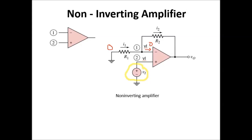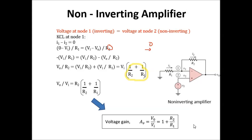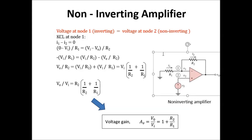Since the current into the op-amp is zero, we proceed with KCL. I-in is going in and I2 is going out. It's okay to assign other directions as long as you standardize: current into the node is positive and current leaving the node is negative. You will get the same answer regardless.